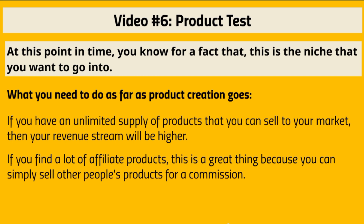There are different routes: you can find affiliate products — products other people have created — and send your blog traffic to them, earning a commission when someone buys. For example, if a vendor has a video course and offers 50% commission, you get 50% per sale. The upside is no customer support; the downside is only half the revenue. Creating your own product earns you 100% commission.